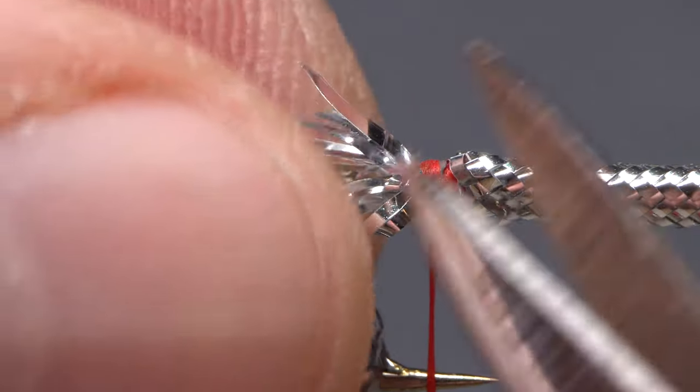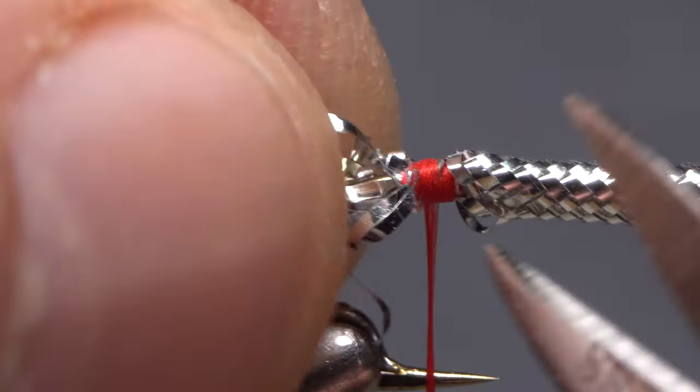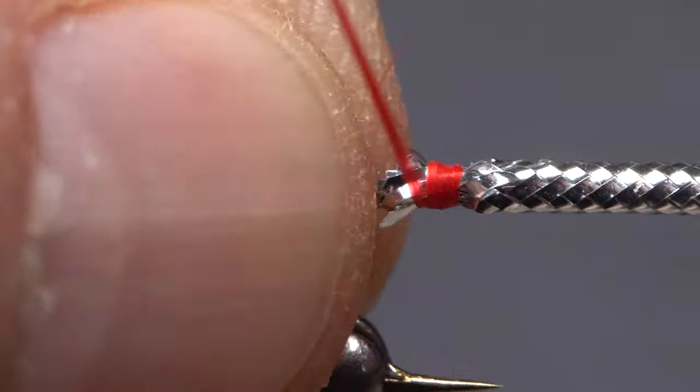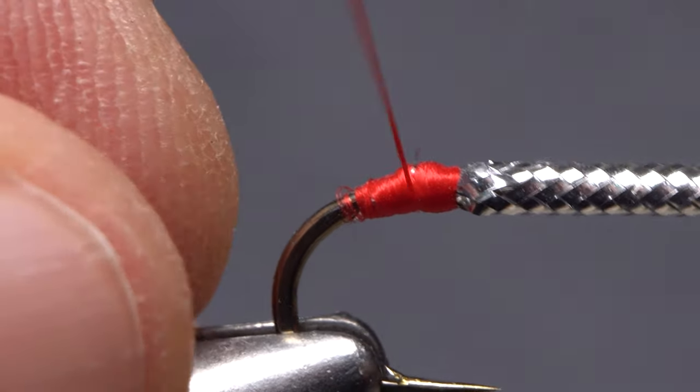Some patterns, like zonkers, call for leaving the frilly stuff, but most, like Mickey Finn's or Dace, suggest trimming it off. With everything trimmed close, take tight thread wraps to cover up any loose ends.